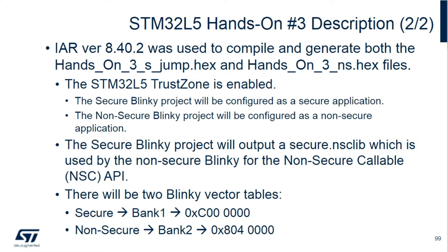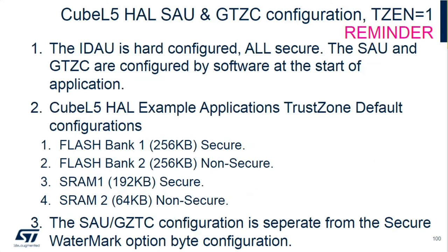I'll show you that in the linker file — that's the way they're set up. Reminder slide: you've seen this before when doing the secure project. Flash one and two are set up for secure and non-secure. SRAM one and SRAM two are set up as secure by the SAU. Then the SAU global TrustZone controller — we're not using any peripherals controlled by that since the GPIO is TrustZone aware.